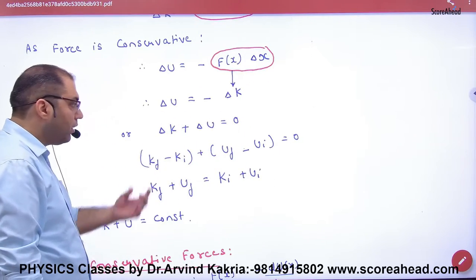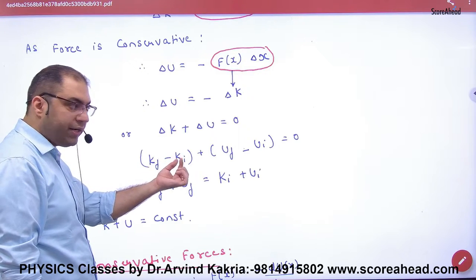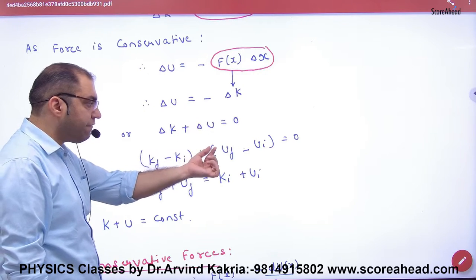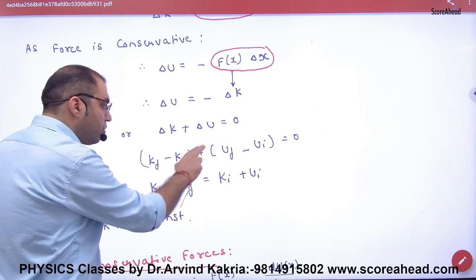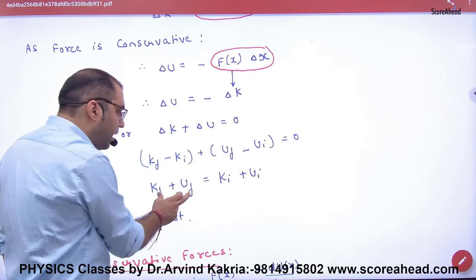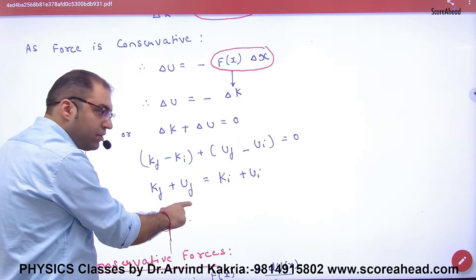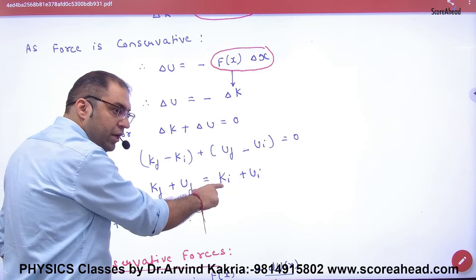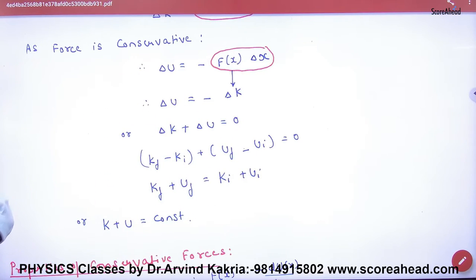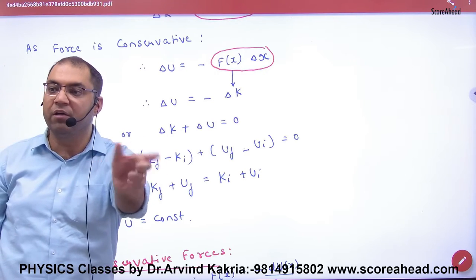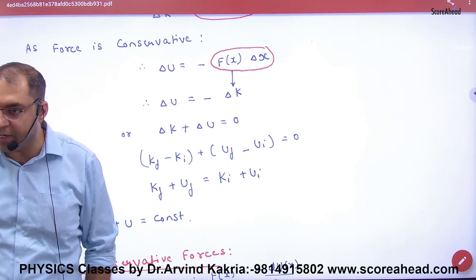Delta K + delta U = 0। Delta K होता है final kinetic minus initial kinetic, delta U होता है final potential minus initial potential। Initial terms right side ले जाओ तो: final kinetic + final potential = initial kinetic + initial potential। यानी किसी भी दो points पर sum of kinetic and potential energy will remain same। यह point clear है?